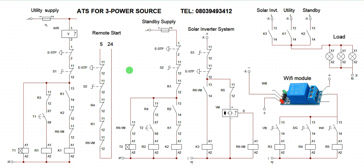In a load management system, some loads are isolated, and each time any of the power sources is activated, only the appropriate loads are on. However, if your load demand is correctly sized to match any of the power sources, whichever is active will be able to power all loads. The Wi-Fi system is primarily for overriding the sequence when you want to alter the system's operation.